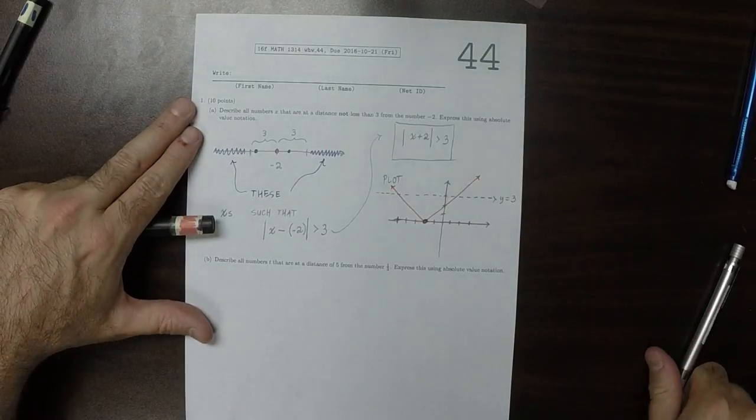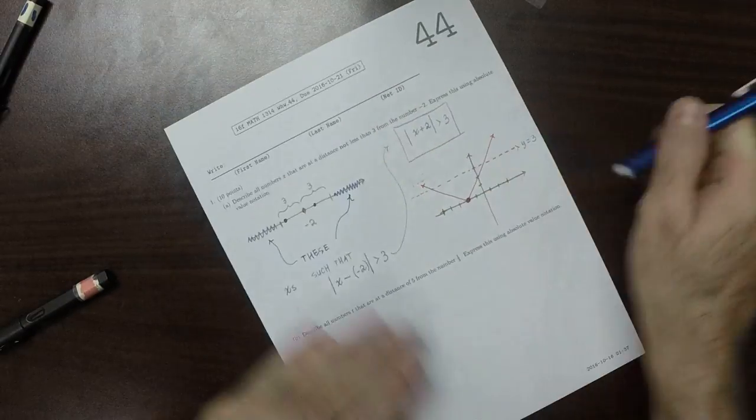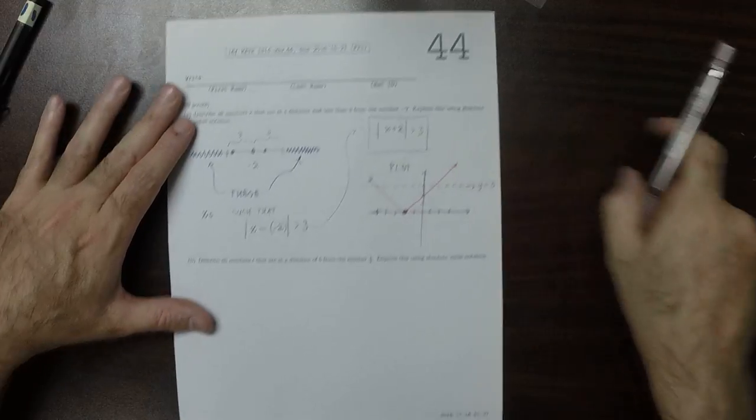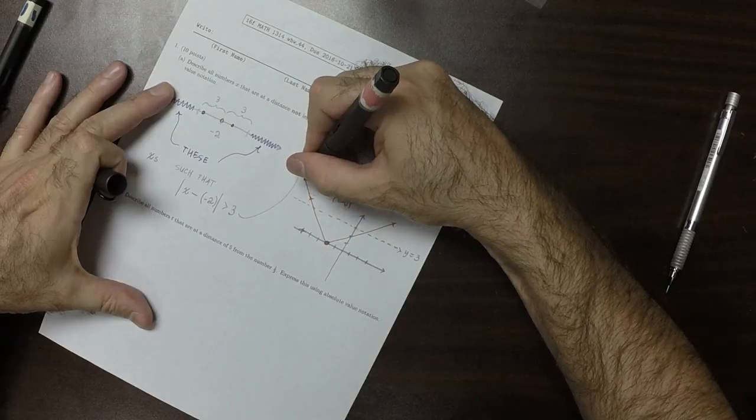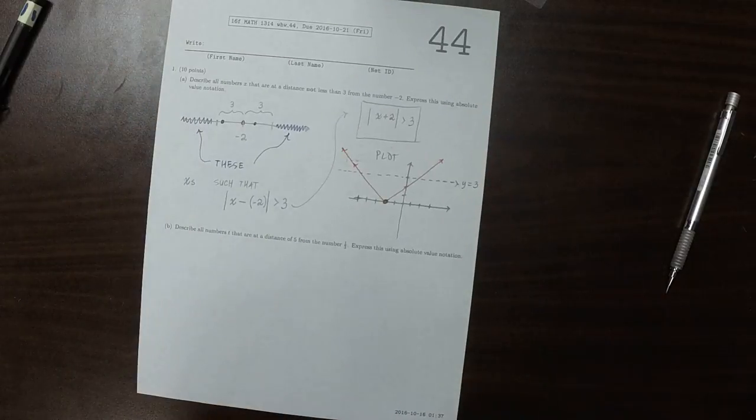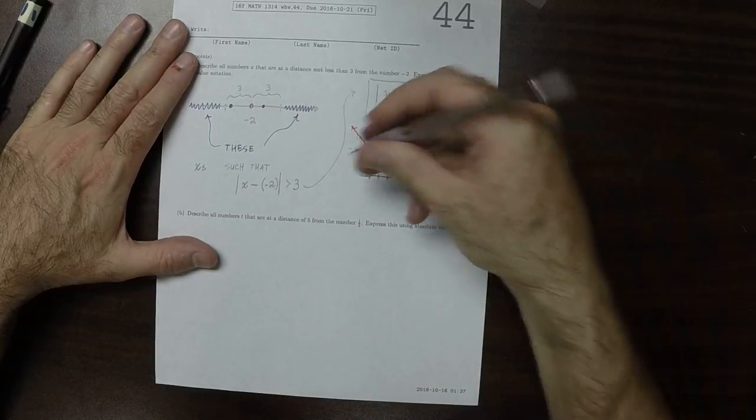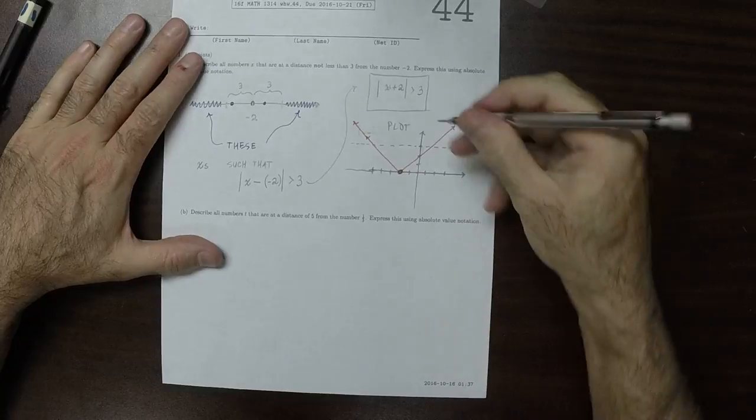So we want to know everywhere, let's erase this. We want to know everywhere that the red is above the dashed line.